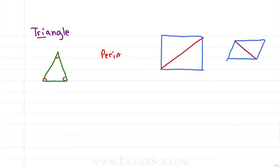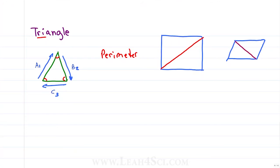We'll start simple with the perimeter, remembering that it's just the distance around. All I do to calculate the perimeter of a triangle is take side one, side two, and side three. You can call these sides whatever you want — A, B, C — as long as you add all three together. So the equation is A plus B plus C.